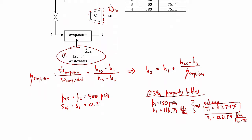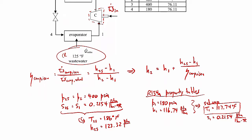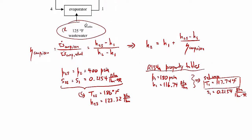So S2S will have the same specific entropy as S1. Going back to the property tables for those two known properties (P2S = 400 PSIA, S2S = 0.2154), and doing a little interpolation, T2S comes out to be 186 degrees Fahrenheit and H2S is 123.32 BTUs per pound mass. Now that we know H2S, plugging into our expression: H2 comes out to be 124.97 BTUs per pound mass.